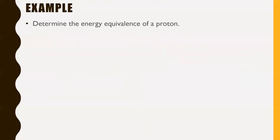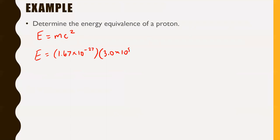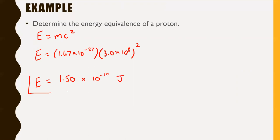For example, determine the energy equivalence of a proton. We assume we can take a single proton and turn it entirely into energy. This comes from E equals MC squared. The mass of a proton is 1.67 times 10 to the negative 27 kilograms, and C is the speed of light, 3.0 times 10 to the 8, but it's C squared so we square it. Rounding to three significant digits, the answer is 1.50 times 10 to the negative 10 joules. That's how much energy you'd get from converting all the mass of a proton into energy.